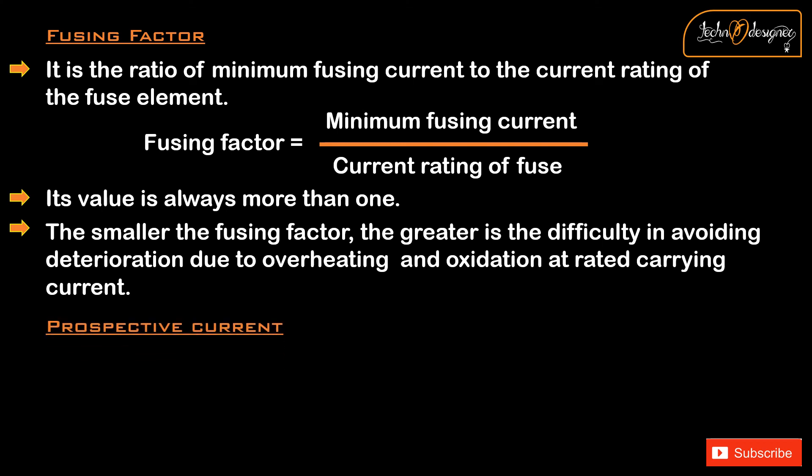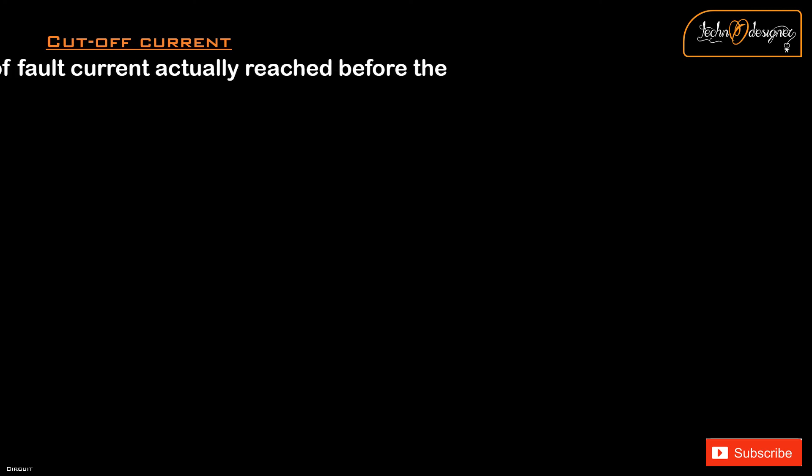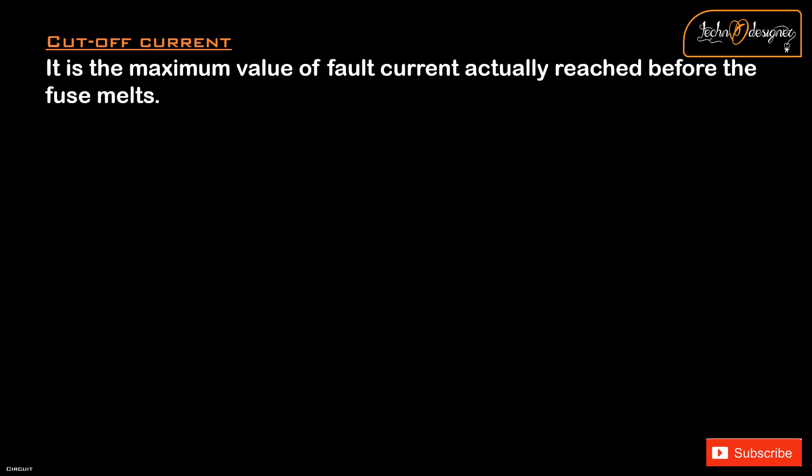Perspective Current: the fault current would normally have a very large first loop, but it actually generates sufficient energy to melt the fuse element well before the peak of this first loop is reached. Cut-off Current: it is the maximum value of fault current actually reached before the fuse melts.